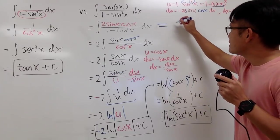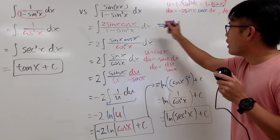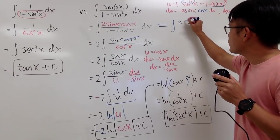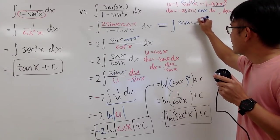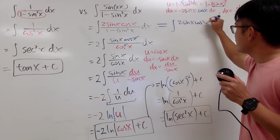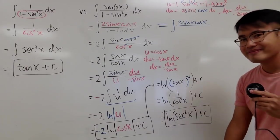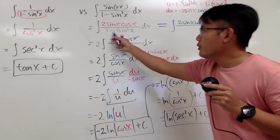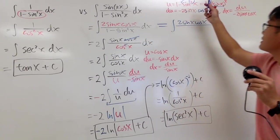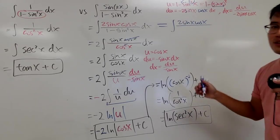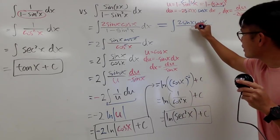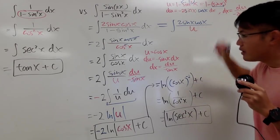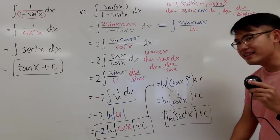Anyway, I will write this down. This is the integral of 2 sine x cosine x over u — since the whole denominator was u — and then the dx.